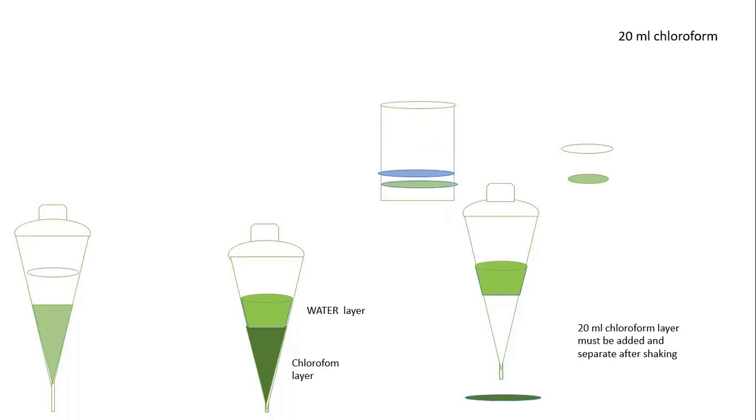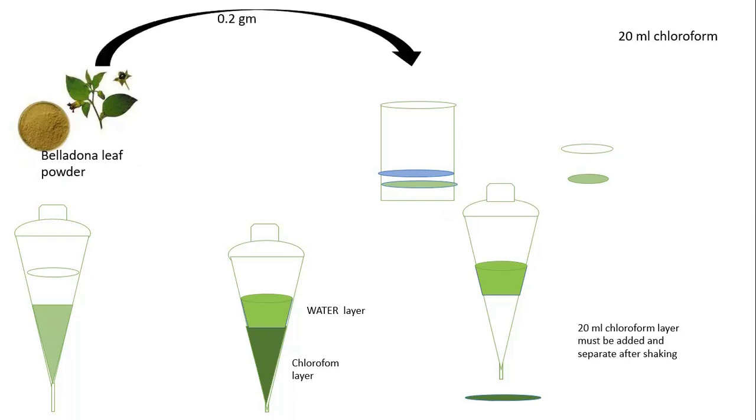We have to take a beaker. To that beaker, add belladonna leaf powder. First, purchase belladonna leaf or dry powder. If you purchase leaves, then dry it and powder it to particle size 60 mesh to be utilized for this examination. Then transfer 0.2 gram of the belladonna powder into that beaker. Then take water.